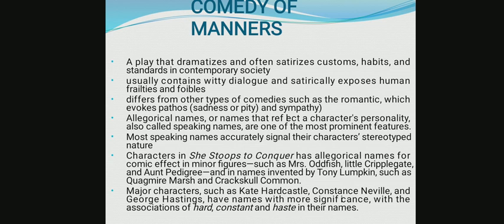Then obviously you have major characters like Kate Hardcastle, who is the heroine or protagonist of She Stoops to Conquer. Then you have Constance Neville — the word 'constant' is embedded within her name. Kate Hardcastle means Kate is a strong personality, hard as a castle. George Hastings — 'haste' means quickly — George is a character who is trying to quickly elope with his lover. These names have more significance and associations with words like 'hard,' 'constant,' and 'haste.'